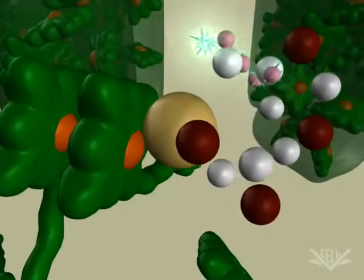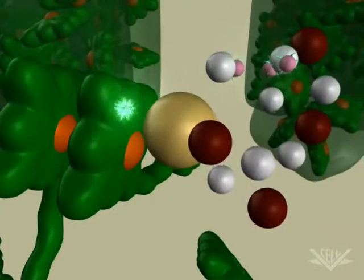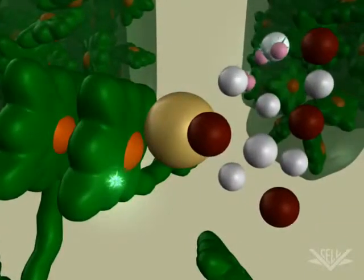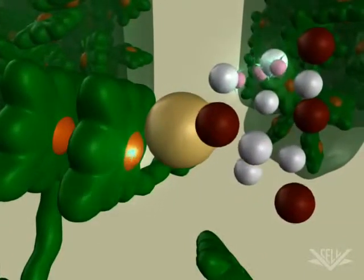The P680 molecules are then reduced by the addition of an electron generated by the splitting of water molecules at the oxygen-evolving complex.